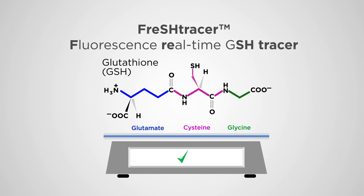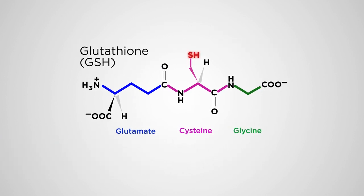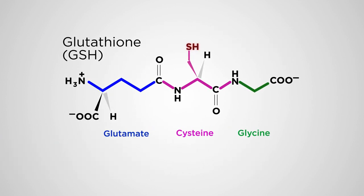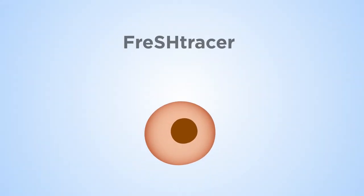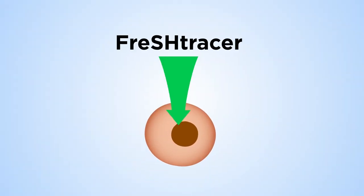His imaging probe, named Fresh Tracer, works by binding to the thiol group of glutathione. It easily penetrates cells, making it suitable for real-time tracking of glutathione levels in living stem cells.